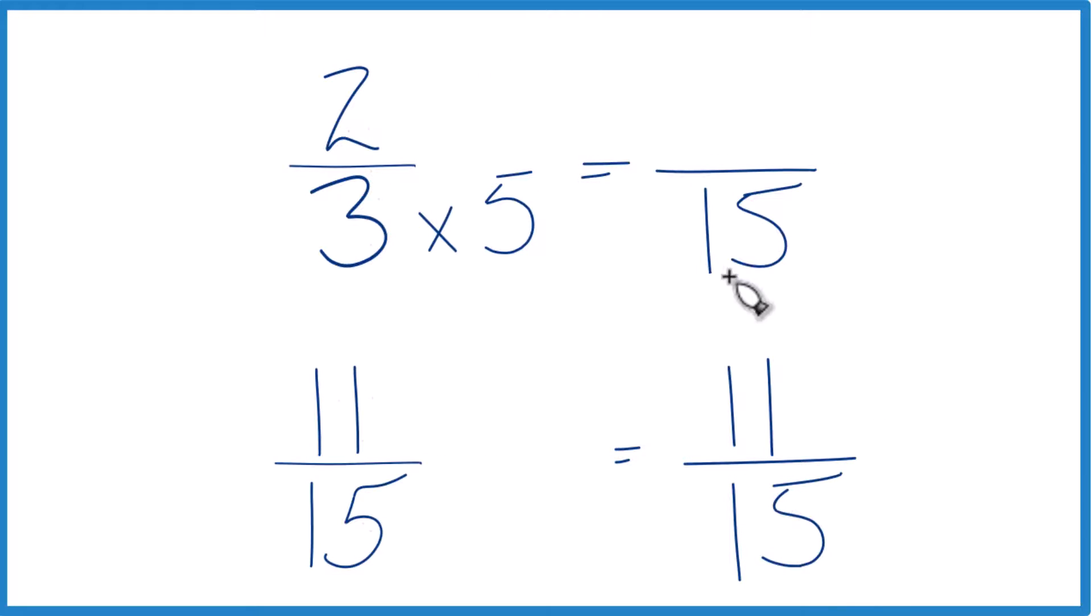Now we have the same denominator, but since we multiplied the 3 here by 5, the denominator by 5, we have to multiply the numerator by 5. That's because 5 over 5 is 1, so we don't change the value, just the way it's represented.